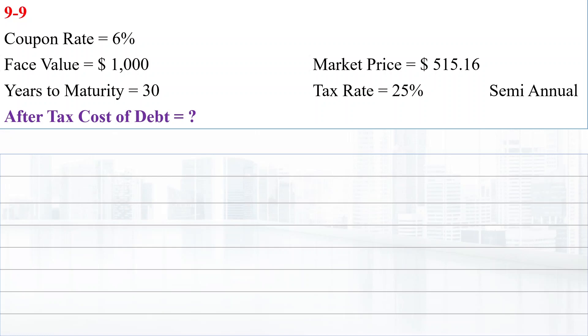As the payments are semi-annual, we divide the coupon rate by 2 and multiply years to maturity by 2. The coupon rate will be 3%, years will be 60, and the coupon amount will be $30.